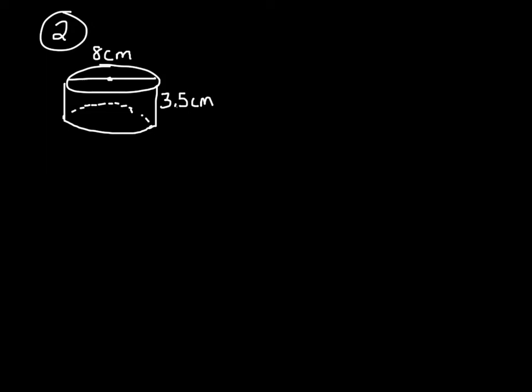So in example number two, we have another cylinder. We know that here, the diameter, this is the diameter, is 8. The height is 3.5. So we write down the formula. Volume equals pi r squared times height.